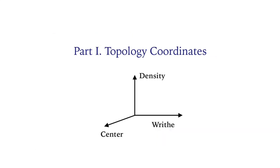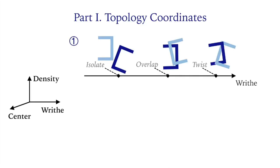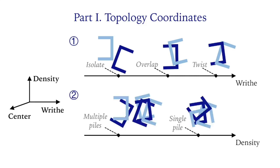This work quantifies the entanglement situation into topology coordinates, including righty, density, and center. Twisted objects have higher righty than overlapped ones. Meanwhile, if there are several distributed piles of objects, the density is lower than one pile. And center indicates the locations of entanglement center.